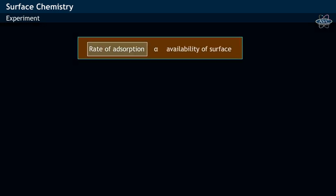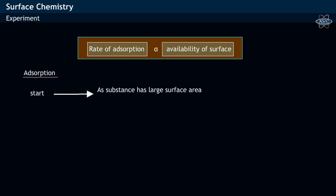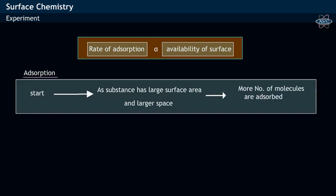The rate of adsorption depends on the availability of space present on the substance. At the start of the adsorption process, as the substance has a large surface area and larger space, more number of molecules are adsorbed — that is, the rate of adsorption is very fast.